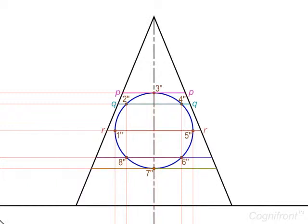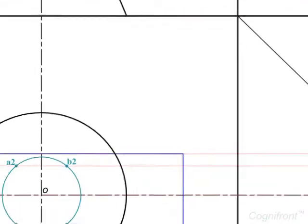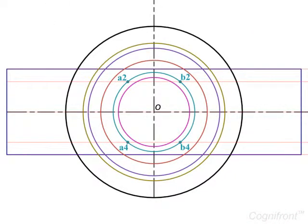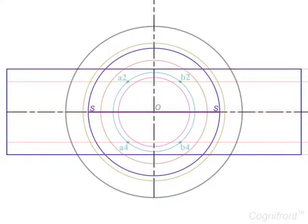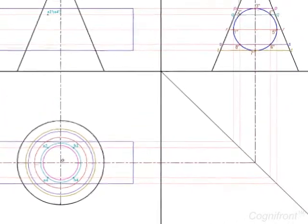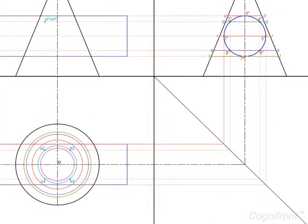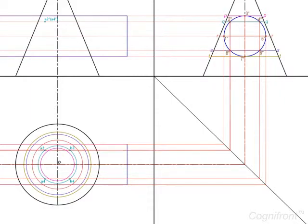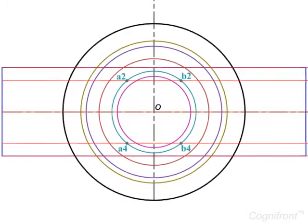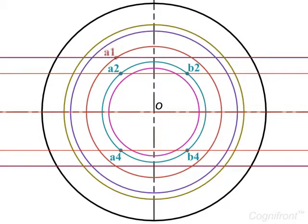Now repeat the above steps for each of the horizontal planes RR, SS and TT passing through the other points: 1-double-dash, 3-double-dash, 5-double-dash, 6-double-dash, 7-double-dash and 8-double-dash of the circle in the side view. Draw circles in the top view by taking the lengths RR, SS and TT as diameter. Project the points onto the top view to meet the respective circles at A1, A3.